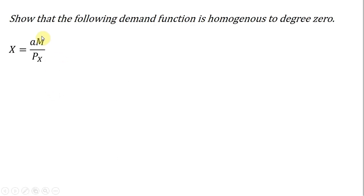And finally, the last slide here, we're going to show that the following demand function coming out of this Cobb-Douglas utility function is homogeneous to degree zero. So what does that mean? Demand is homogeneous to degree zero.